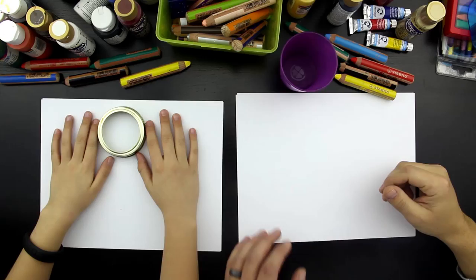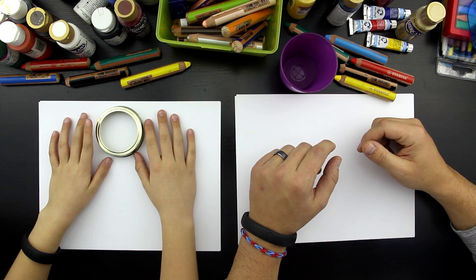Hey, this is Rob at art4kidshub.com and I got a cool kid with me. Chickas! What are we drawing today? The Olympic rings. The Olympic rings, you got it.